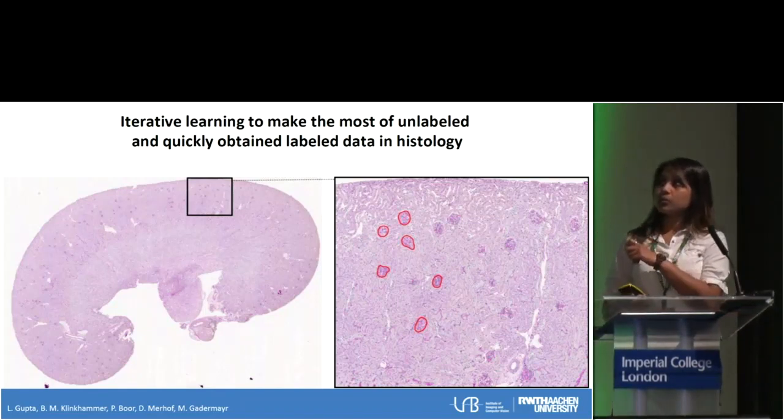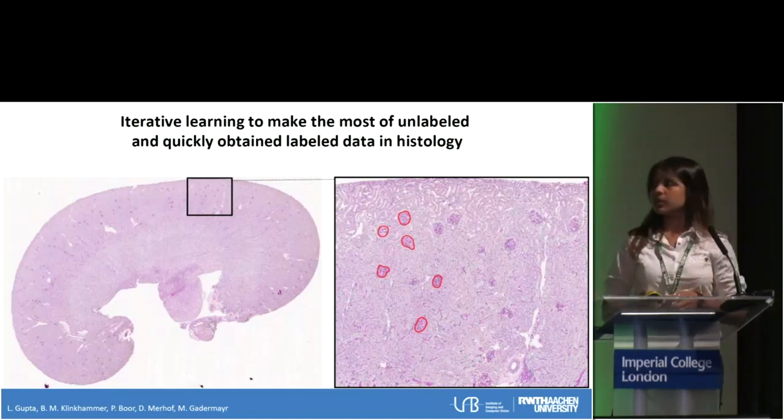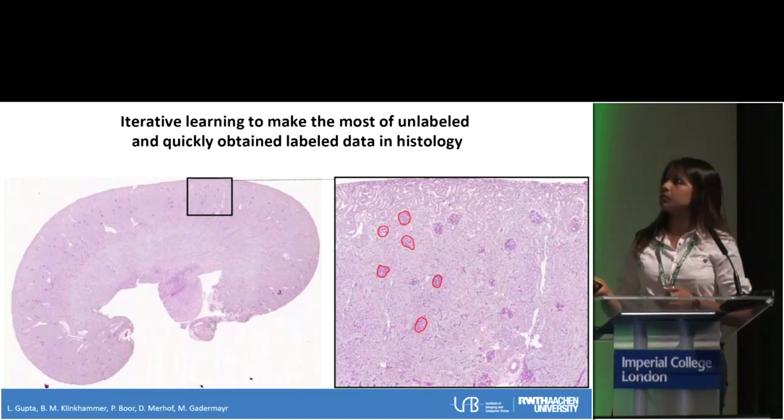This kidney tissue image is really high resolution, and such small objects need to be marked — it takes a lot of annotation time, which by now we are all familiar with.